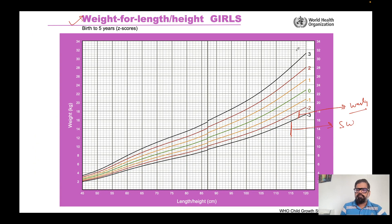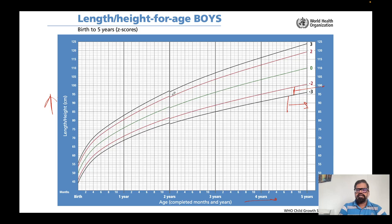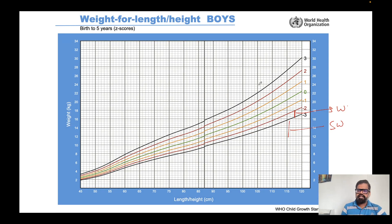For girls, plotting weight-for-height: if it falls above three z-score lines, the child is obese; between three and two is overweight; between two and one is a possible risk of overweight. Checking the table confirms: obese, overweight, and possible risk of overweight. The same applies for boys — above three is obese, three to two is overweight, and two to one is possible risk of overweight.